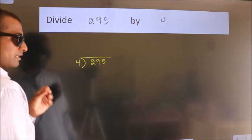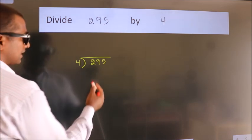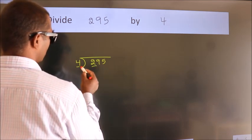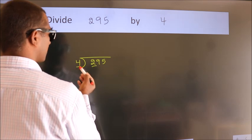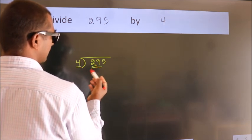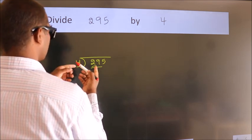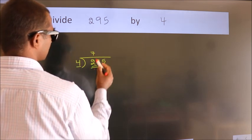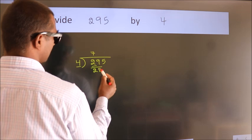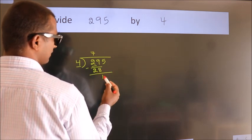This is your step 1. Next, here we have 2, here 4. 2 is smaller than 4, so we should take 2 numbers: 29. A number close to 29 in the 4 table is 4 times 7 equals 28. Now we subtract and get 1.